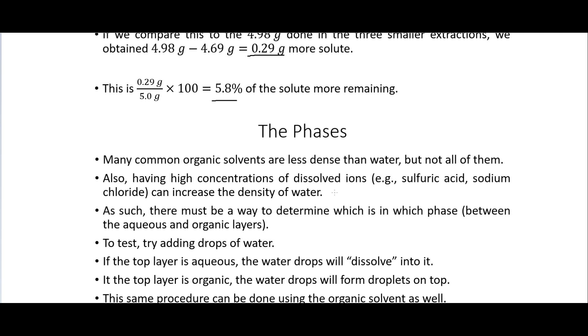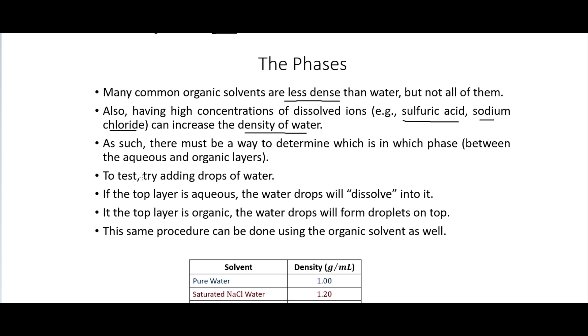So the phases here. So remember we're looking at the organic phase and the water or aqueous phase. And so many common organic solvents are less dense than water but not all of them. And so having high concentrations of dissolved ions such as sulfuric acid or sodium chloride can increase the density of water. As such there must be a way to determine which of the two solvents is in the phase on top. So we want to know what's on the top layer and what's on the bottom layer. A lot of these solvents are just clear. So just looking at them you can't really tell. So we want to try testing to see which one is which. So what we can do is just try adding drops of water. If the top layer is aqueous the drops will just dissolve into it. If the top layer is organic the drops will form droplets on top. And so that will tell you that the top layer is organic or if it dissolves into it that would tell you that the top layer is aqueous.